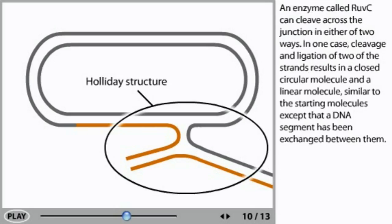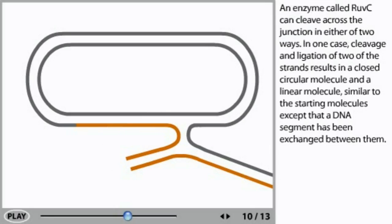An enzyme called RuvC can cleave across the junction in either of two ways. In one case, cleavage and ligation of two of the strands results in a closed circular molecule and a linear molecule, similar to the starting molecules except that a DNA segment has been exchanged between them.